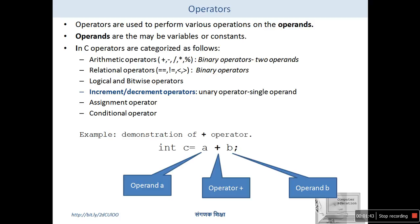The arity is the minimum number of operands required for any operator. The arity of relational operators is two. We also have logical operators — logical AND, logical OR — and bitwise AND, bitwise OR operators, which perform operations on the bits of any number or data type.